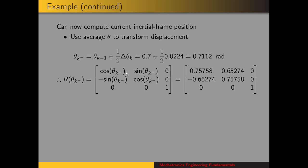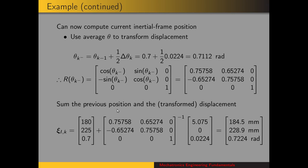To transform the Cartesian displacement from the robot frame to the inertial frame, we use the average angle theta. That's theta K minus, defined as theta K minus 1 plus one-half delta theta K. For this example, that turns out to be 0.7 plus one-half times 0.0224, giving us the value used in our rotation matrix. Here are the numerical values for that rotation matrix. We sum the previous position and the transformed displacement: here are the coordinates at the previous time, the inverse rotation matrix going from robot frame to inertial frame, and the Cartesian displacement in the robot frame. We end up with 185 millimeters in X, 229 in Y, and 0.722 radians as our Cartesian position in the inertial frame.